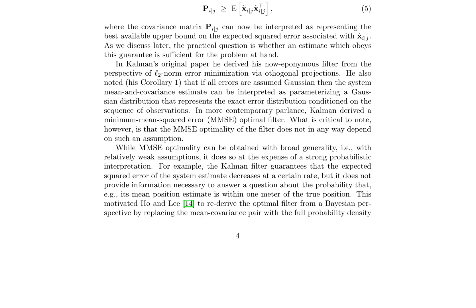In practice, the covariance matrix pi|j can be interpreted as representing the best available upper bound on the expected squared error associated with xi|j, as shown in equation 5. In conclusion, the Kalman filter is a versatile tool for state estimation that does not require Gaussian errors. Its MMSE optimality is achieved under general conditions, and it can be adapted to provide a more comprehensive understanding of the system's state through a Bayesian perspective.